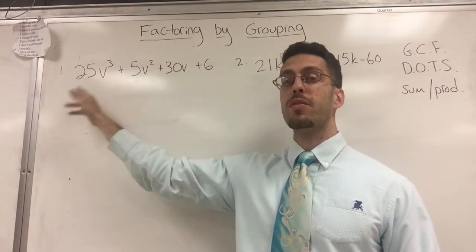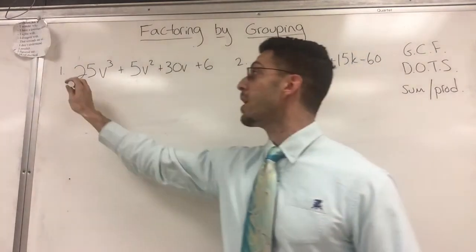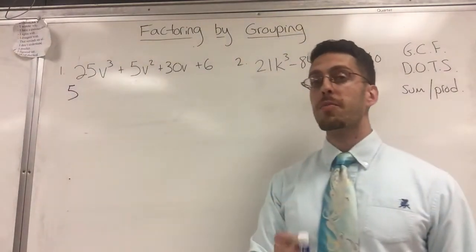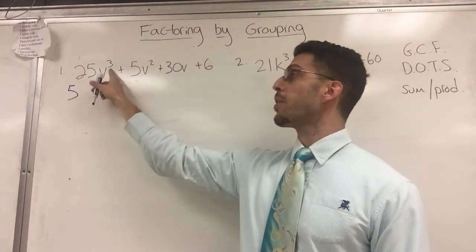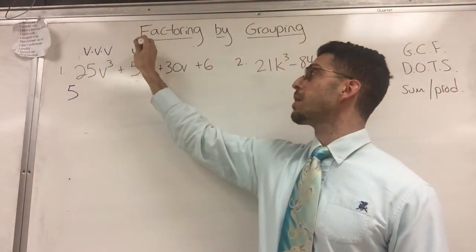Is there anything in common? Is there any factor in common? Is there anything that goes into 25 and 5? Absolutely 5. Not only 5, but look at the variables. V to the 3rd, do you understand that means V times V times V? V squared means V times V.